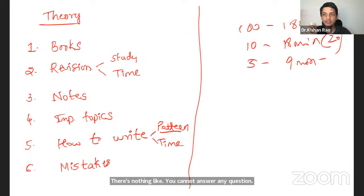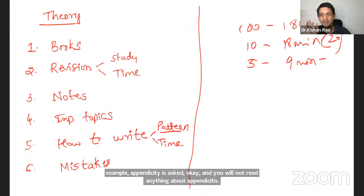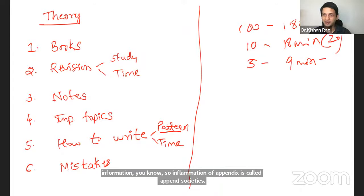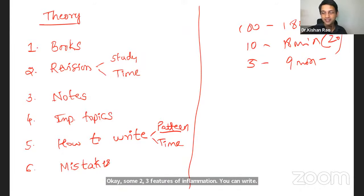If you're not reading surgery as such, you can, from your previous anatomy knowledge or from a physiology, from a pathology, for example, appendicitis is asked. And you have not read anything about appendicitis. Still, you can write one, two lines about the anatomy of appendix and two physiology of appendix, two lines you can write and a pathology. It is means inflammation, you know, so inflammation of appendix is called appendicitis. There's some two, three features of inflammation you can write. What are the features of inflammation seen.